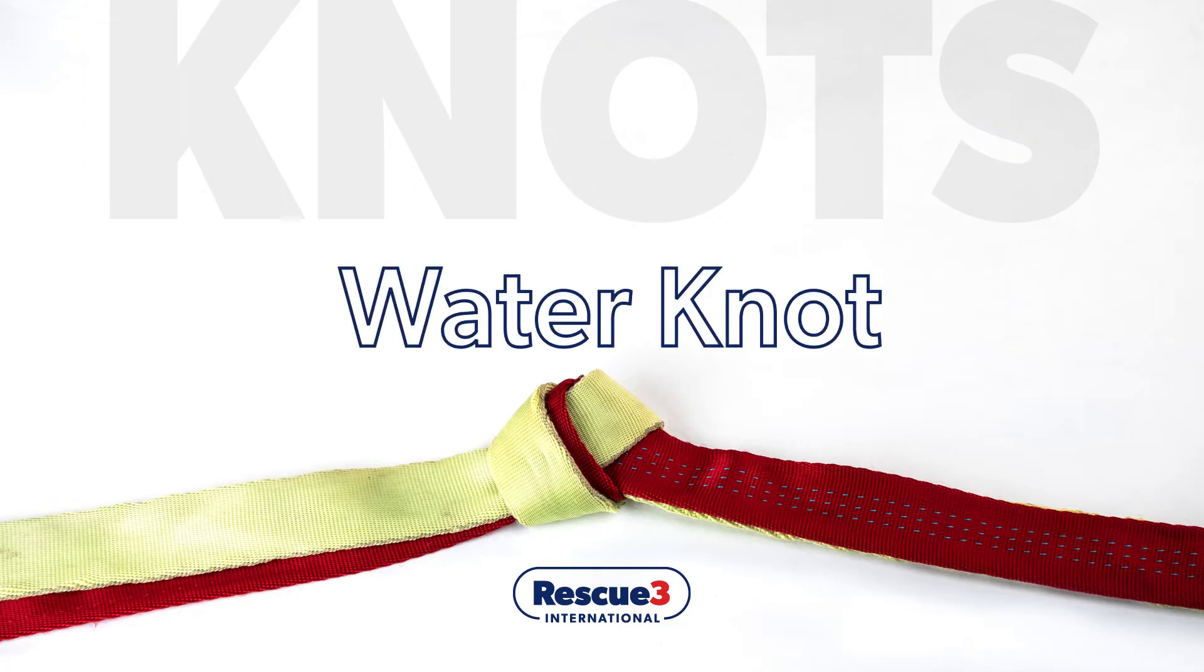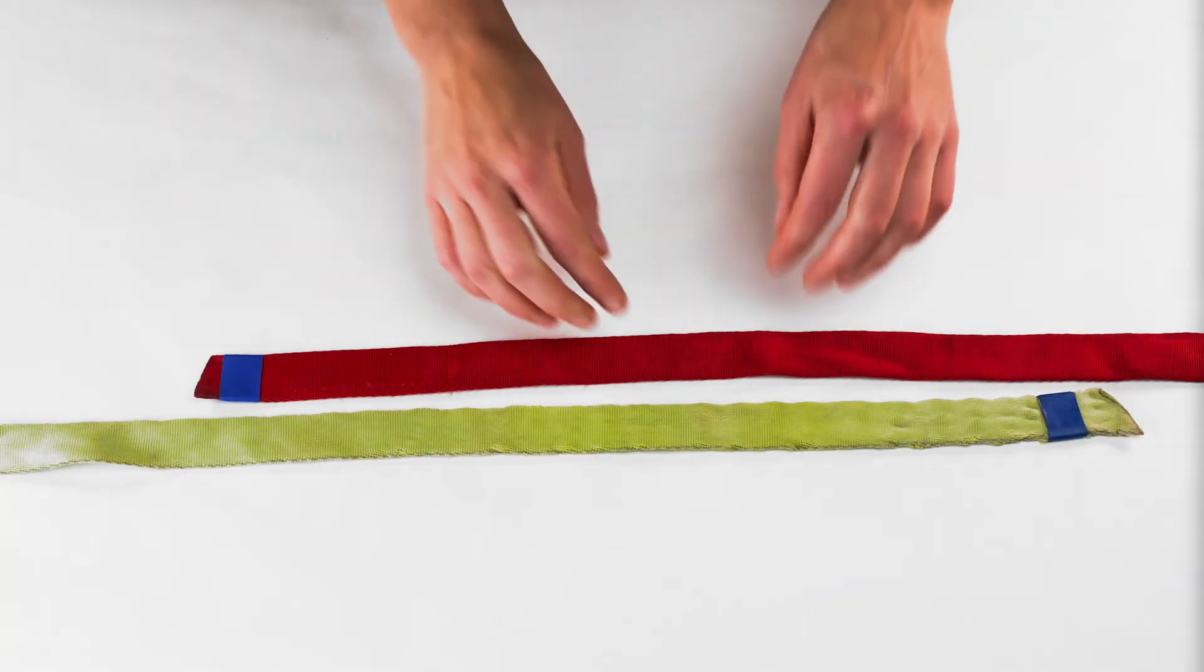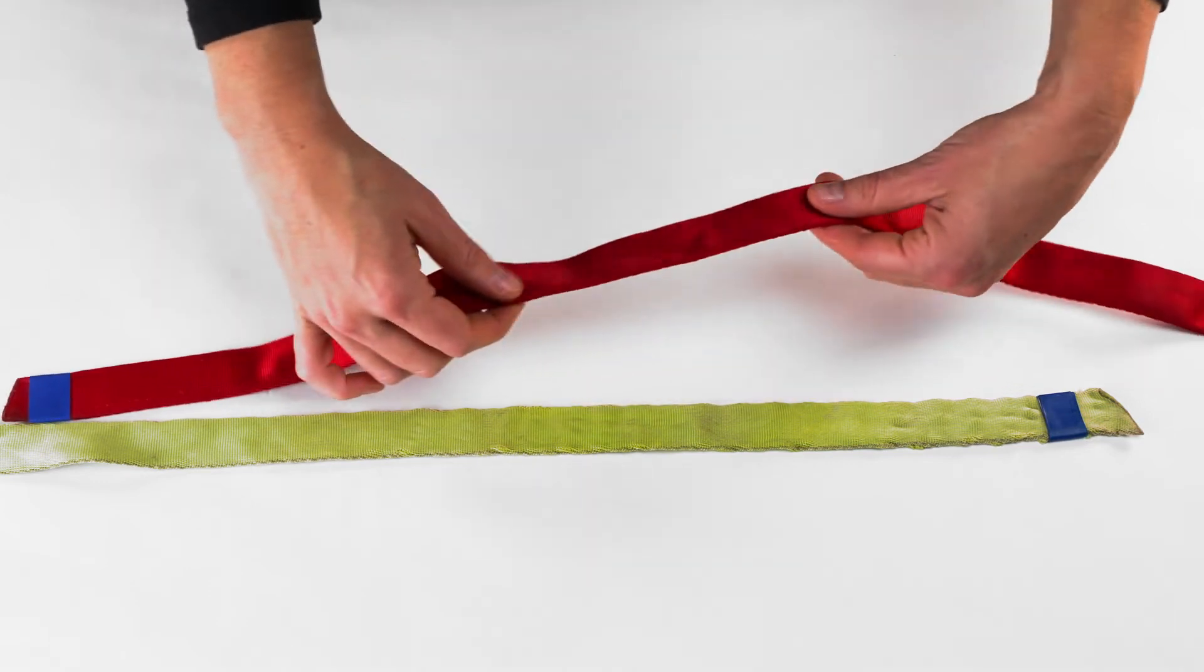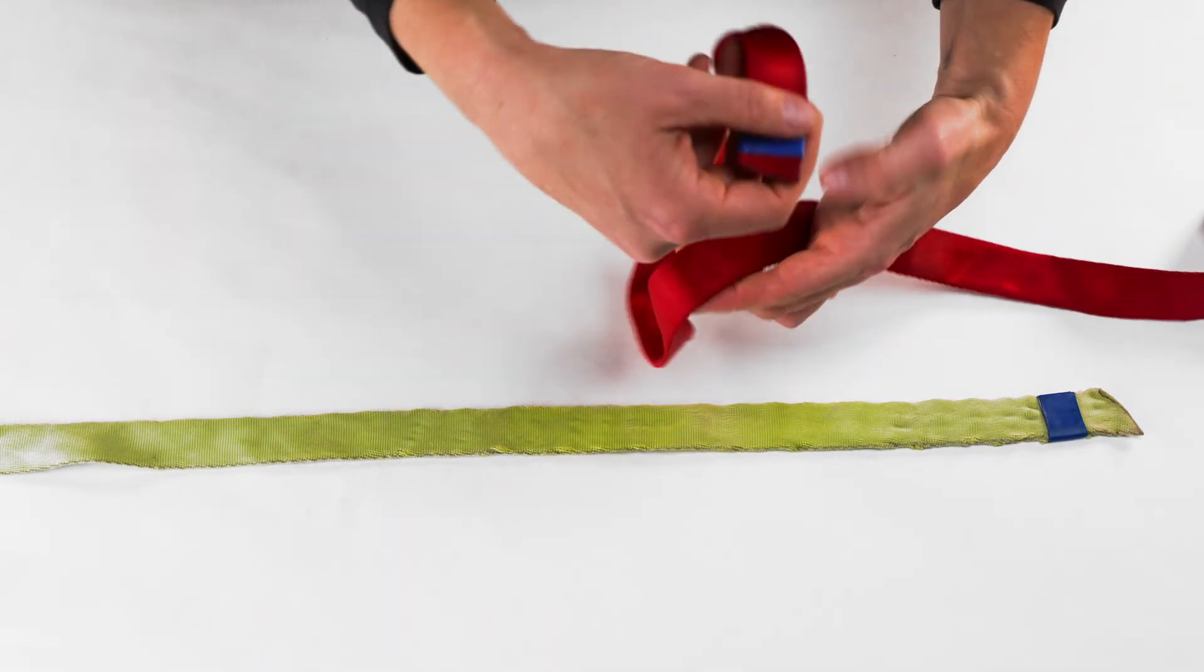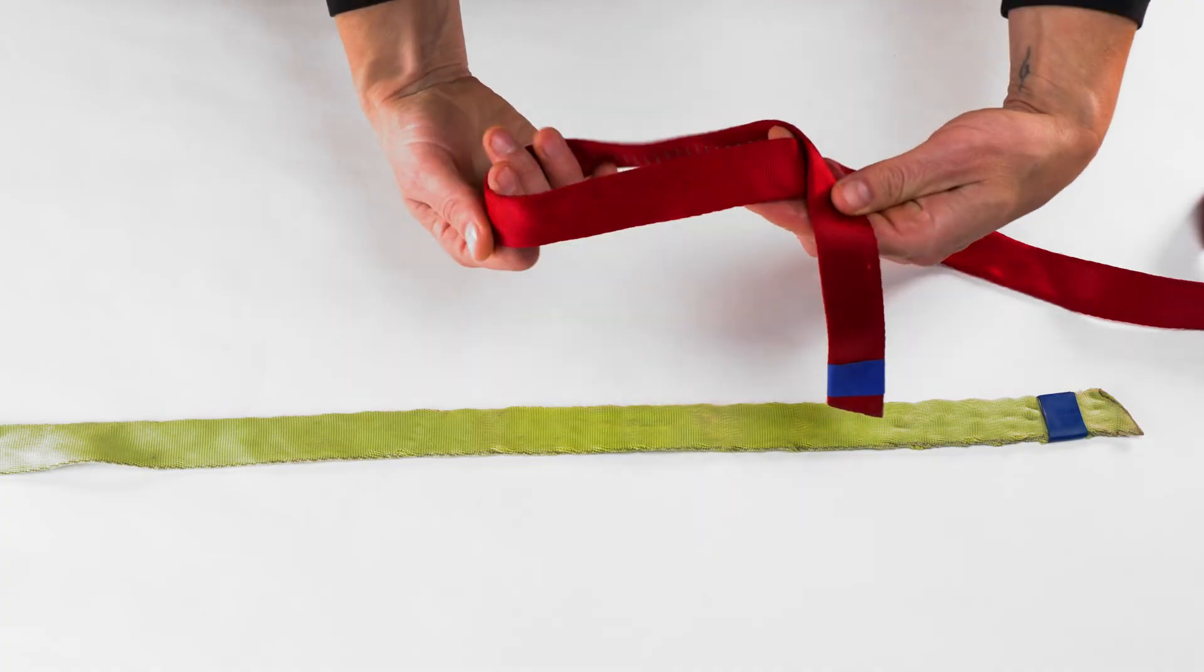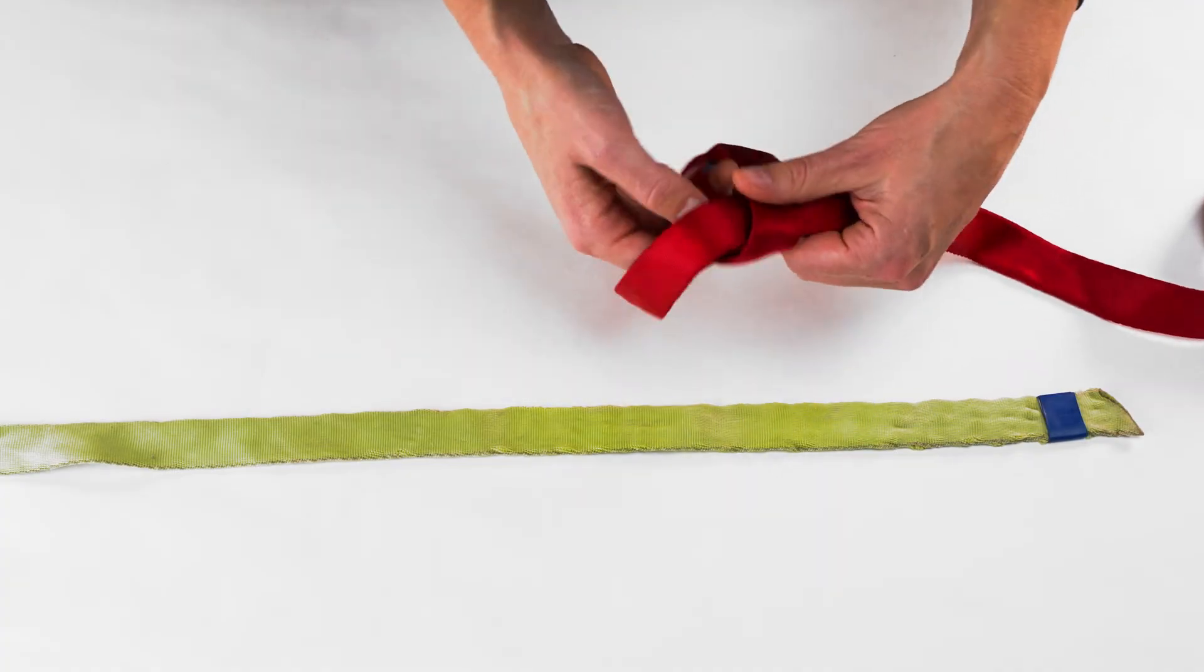Water knot. The water knot starts with a simple overhand knot. Ensure that the webbing sits flat and is not twisted or kinked.